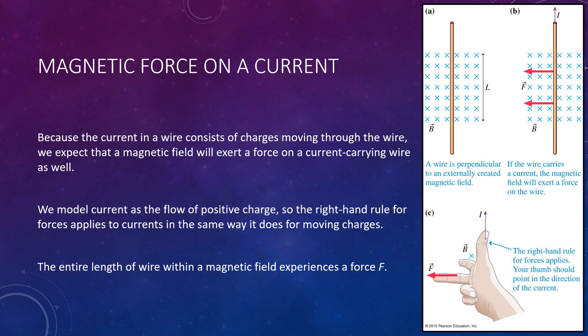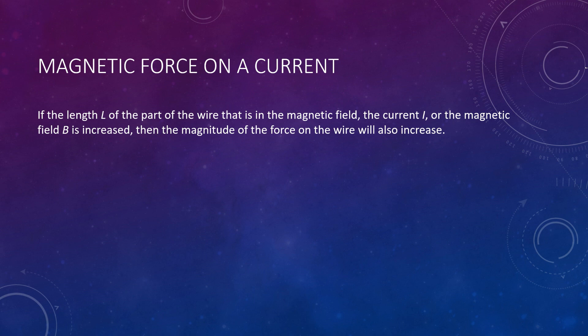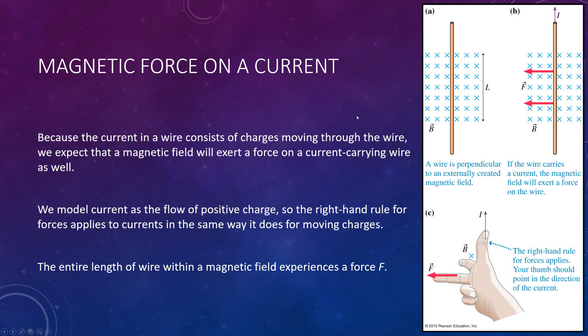Let's think about what would happen here. If you were to increase the length of the wire, increase the current, or increase the magnetic field strength, then the force will increase as well. If we increased the length of the wire exposed, that means there's more wire experiencing the force, so the overall force is greater.